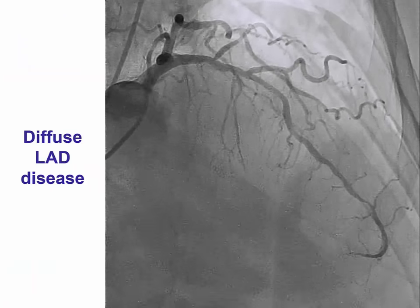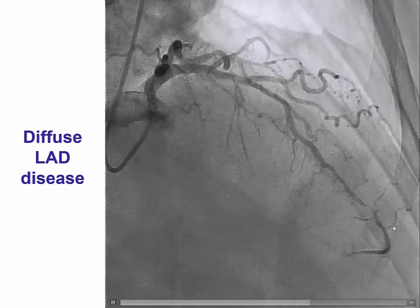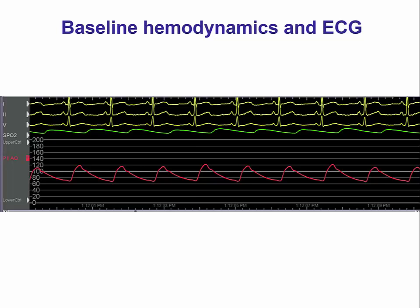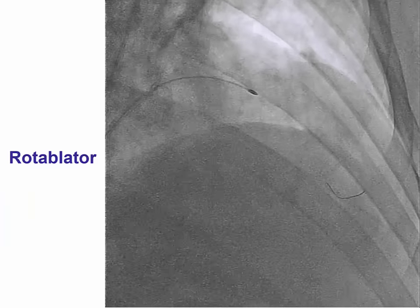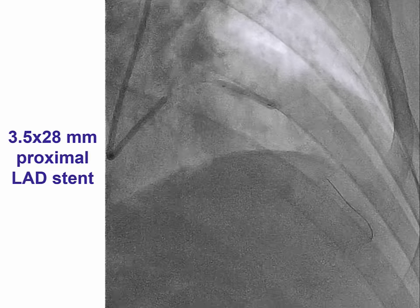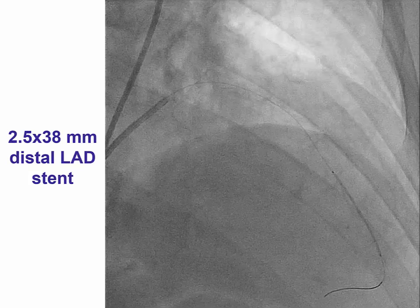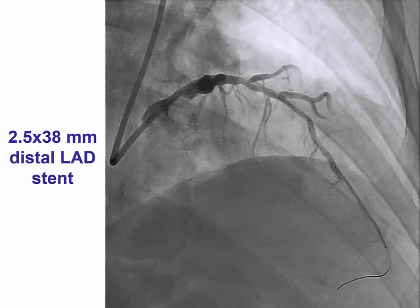This is an example of a patient who presented with diffuse LAD disease with significant calcification and two lesions distally and proximally. Due to calcification, he was treated with rotational atherectomy, then underwent stenting of the proximal lesion with a drug-eluting stent, followed by stenting of the distal lesion with a long drug-eluting stent as well.